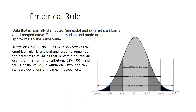This area represents 68% of the data, with limits at mu minus sigma and mu plus sigma as the confidence interval bounds. After that, mu minus two sigma to mu plus two sigma represents 95% of the data, and mu minus three sigma to mu plus three sigma represents 99.7% of the data.